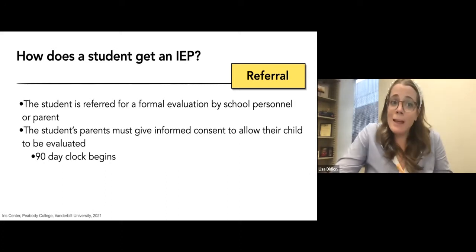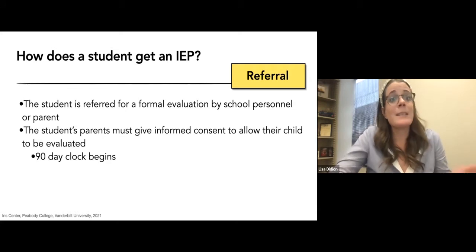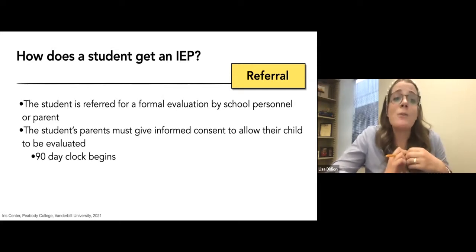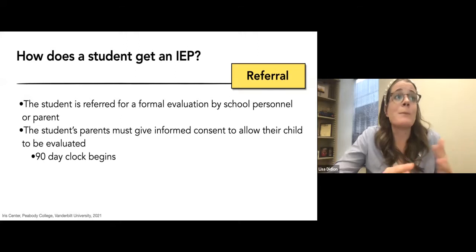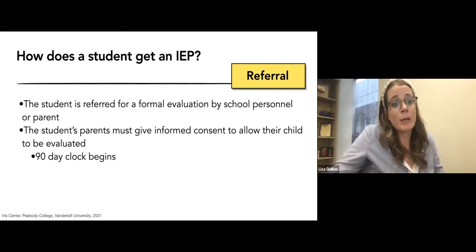If you already have all this information and data collected, it's going to ease the process along and you're not going to be super stressed during those 90 days while keeping the other 25 kids going and progressing. Before the evaluation, the parent has to provide informed consent. Sometimes this will clog things up — you might send home five or six consent letters and call them many times before they send it back, and that's eating into your 90-day clock.